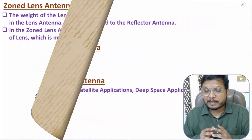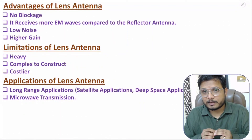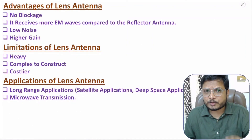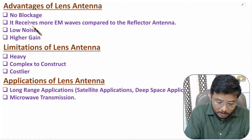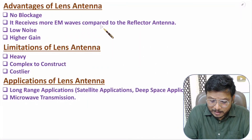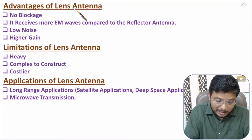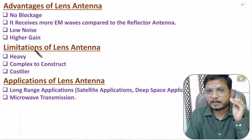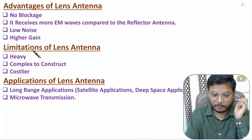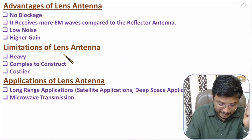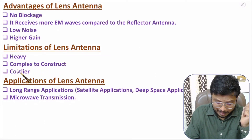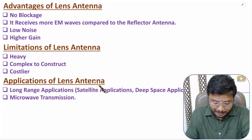The major advantage of lens antenna is no blockage. Unlike reflector antenna, lens antenna has no blockage issue, so it receives more EM waves. Lens antenna is also used for low noise applications and has higher gain because it converts spherical wavefronts into planar wavefront. Limitations are that lens antenna is heavy, complex to construct, and because of its heavy weight it is a costlier antenna.